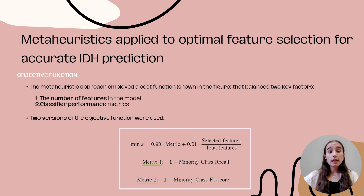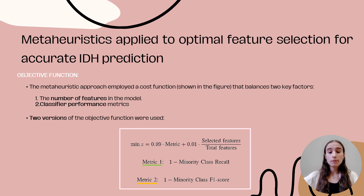Specifically, the cost function used in our metaheuristic approach was designed to balance two main objectives: reducing the number of features and improving the classifier's performance. To achieve this, we used two versions of this function, with the aim of minimizing patients undetected for hypotension and maximizing correct detections overall, particularly in the minority class of hypotensive patients.